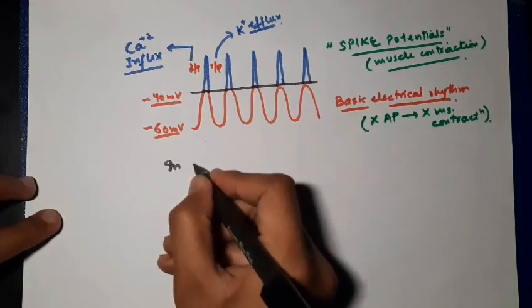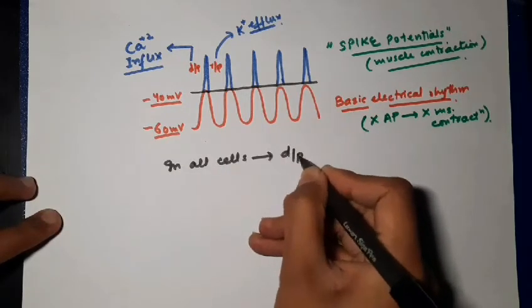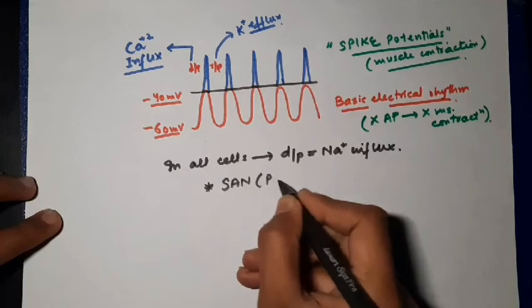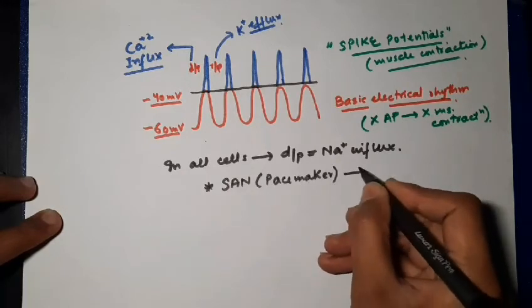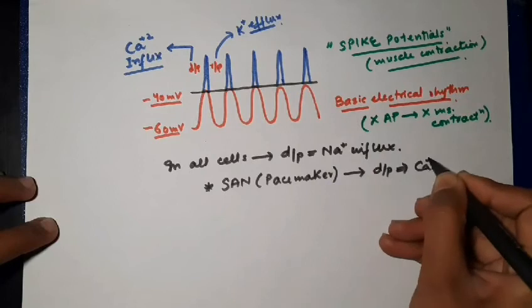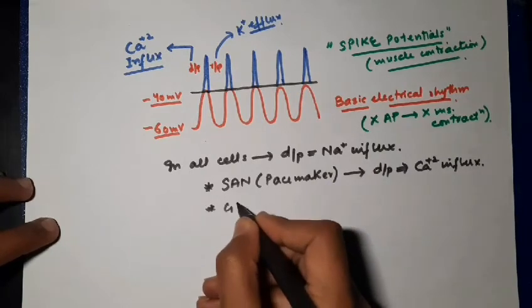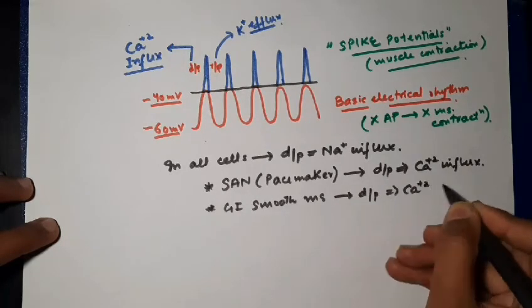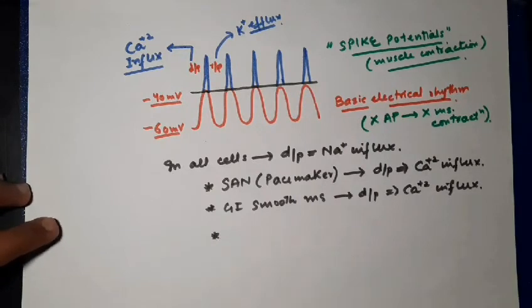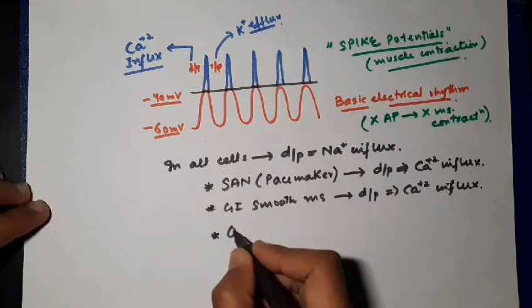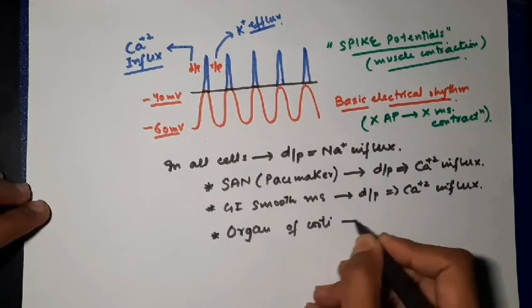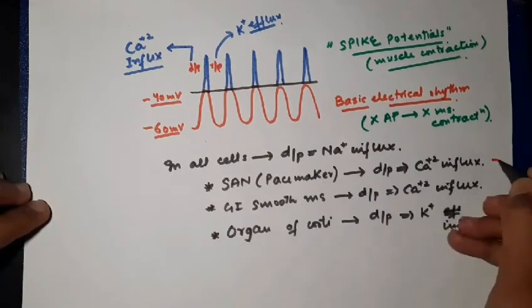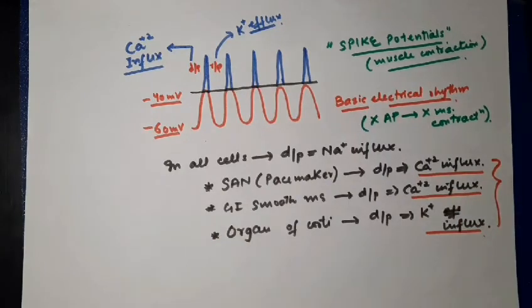In almost all normal cells, depolarization is caused by sodium influx, but there are exceptional cases. In the pacemaker of the heart, the SA node, depolarization is due to calcium influx. Similarly, in GI smooth muscle, depolarization occurs because of calcium influx, not sodium influx. A special case is also seen in the organ of Corti in the ear, where depolarization occurs due to potassium influx — because the hair cells are embedded in endolymph which is rich in potassium ions.